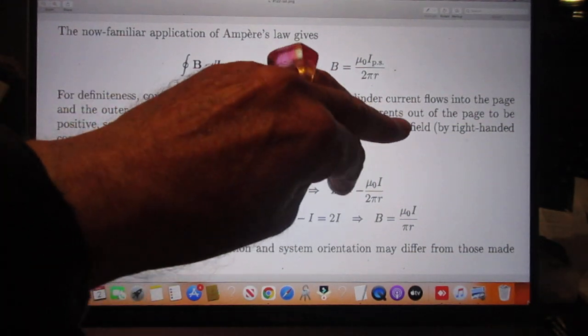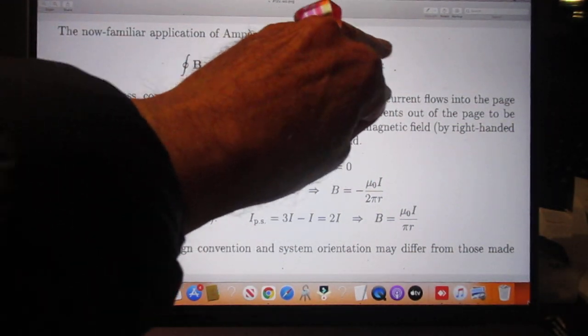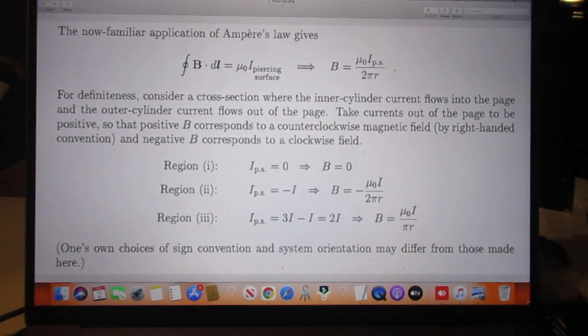So out pops immediately that B is this quantity. Well, in the inner cylinder, if you attach an open surface to your closed-loop, there is no current piercing through it. So B is zero. Ampere's law.